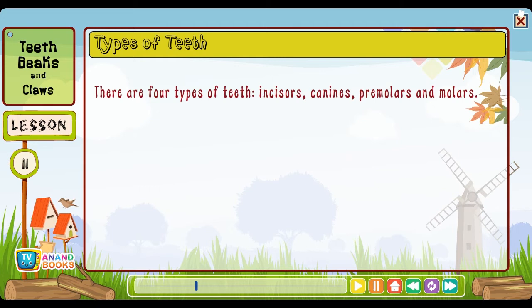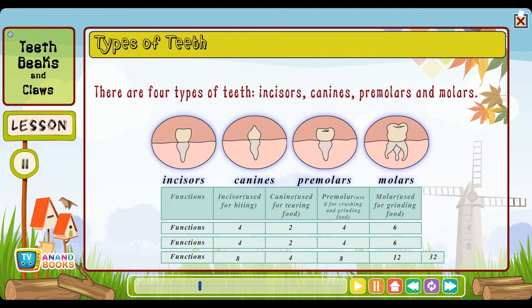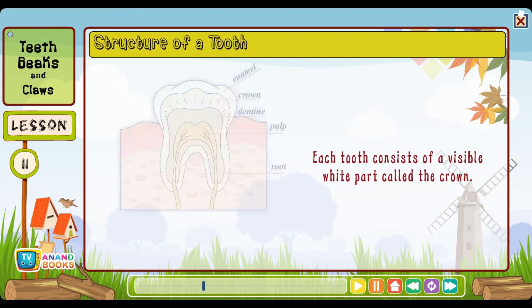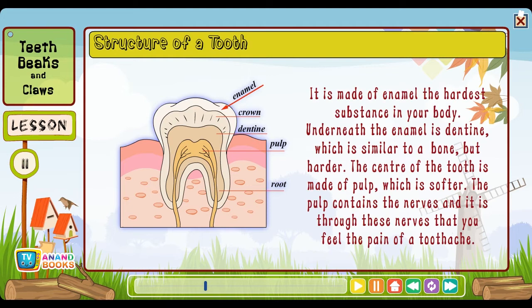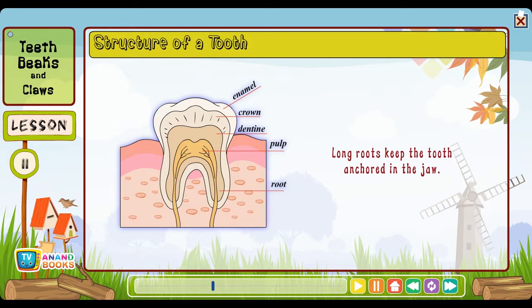Types of teeth: There are four types of teeth — incisors, canines, premolars and molars. All your teeth work together to break food into little pieces so that it is easier to swallow and digest. Structure of a tooth: Each tooth consists of a visible white part called the crown, made of enamel — the hardest substance in your body. Underneath the enamel is dentine, which is similar to a bone but harder. The centre of the tooth is made of pulp, which is softer and contains the nerves — it is through these nerves that you feel the pain of a toothache. Long roots keep the tooth anchored in the jaw.